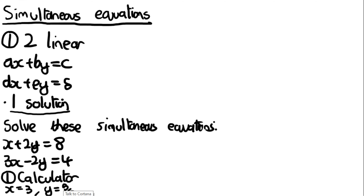Obviously this is the quickest way, but the problem is if the question is solely about solving simultaneous equations worth like 4 marks, you can't just use the calculator — you'll need to show some method to get any marks. It's useful in later topics where you're not being marked on solving them, and you can also use it to check your answers after using one of the other two methods.